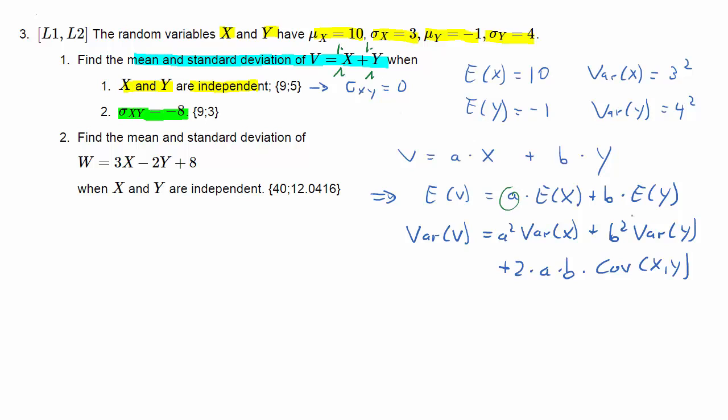In our definition of V, we can think of these weights a and b as being 1. It's a very simple case. Let's tackle question 3.1.1. That's the situation where X and Y are independent. The expected value of V is 1 times 10 plus 1 times -1. That's 9.